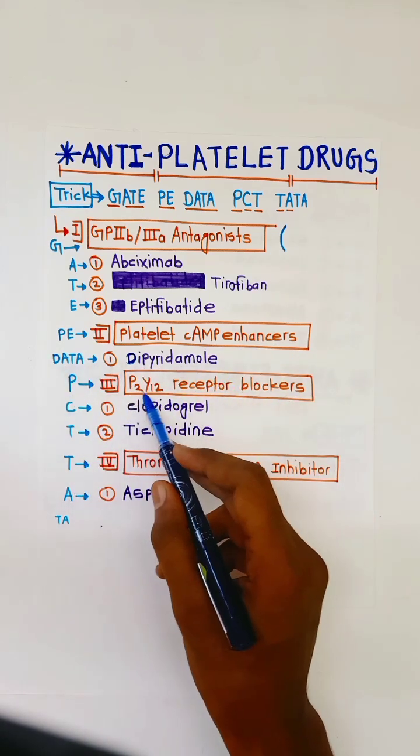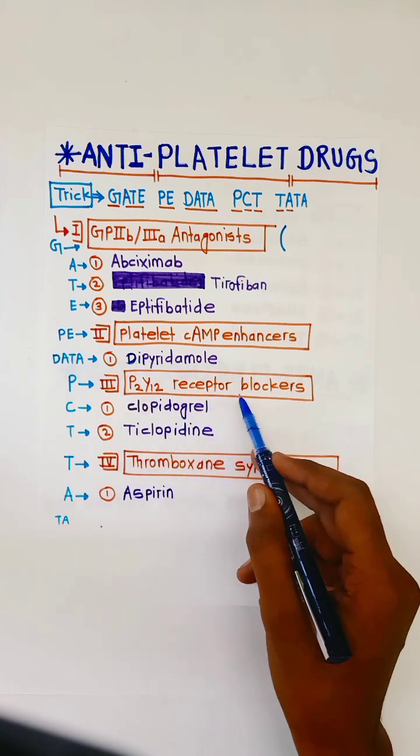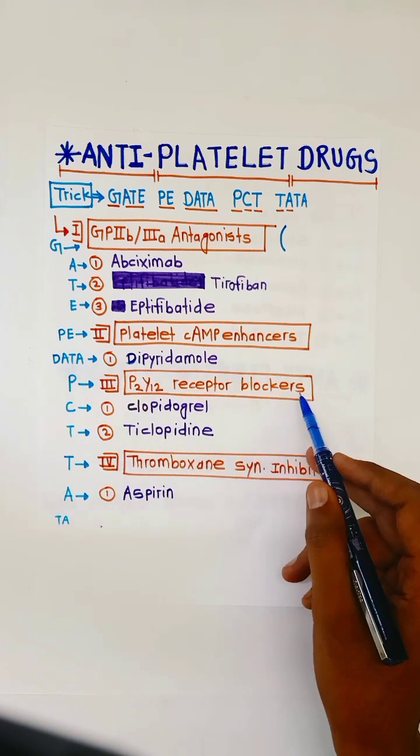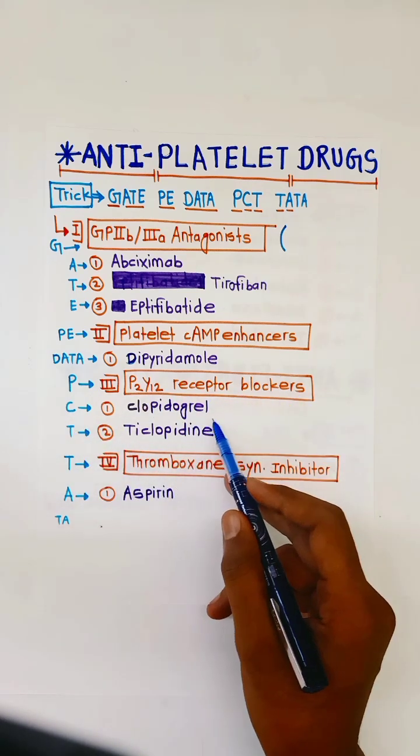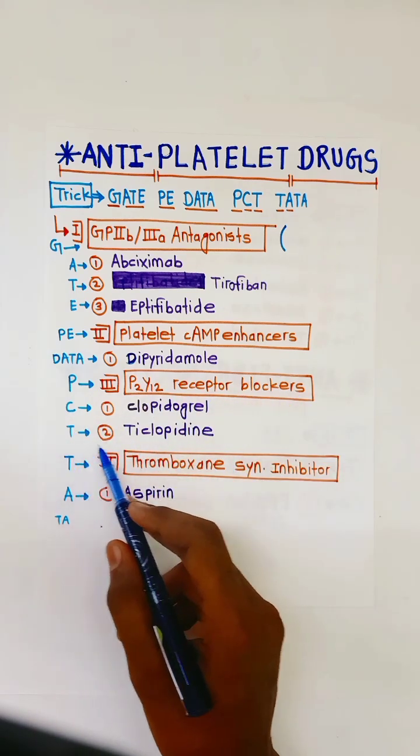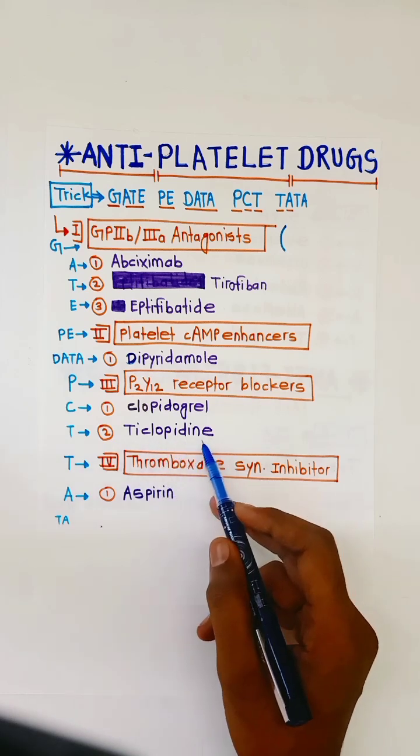PE for P2Y12 receptor blockers — C for Clopidogrel, T for Ticlopidine.